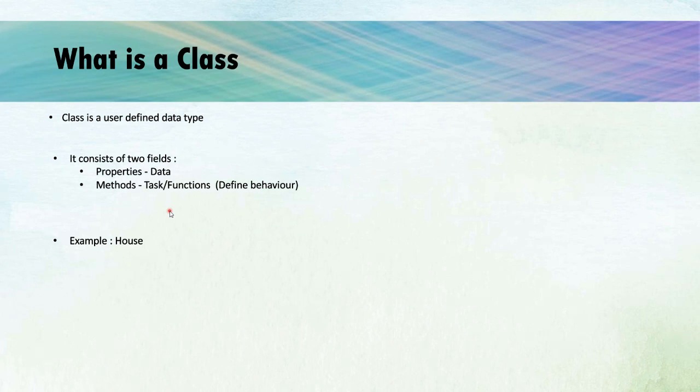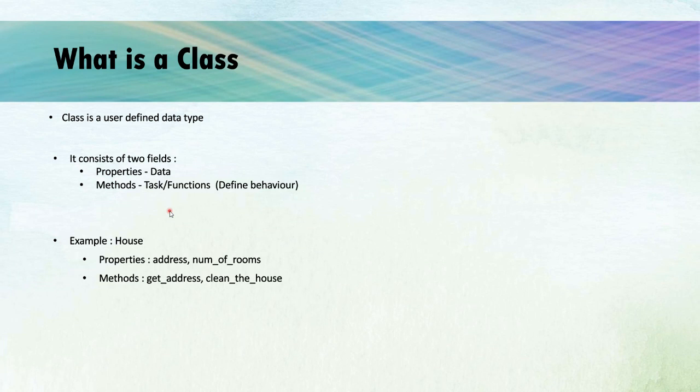Let's take an example of a class house. What properties can a house have? It can have the address, how many number of rooms it has, how many number of floors it has, and what is the color of the house, etc. Now in the method field, we will define what functions we want to perform on the class house. We can get the address using a get function, get_address. We can clean the house, and there can be more functions like switch on the lights, turn off the lights, etc.